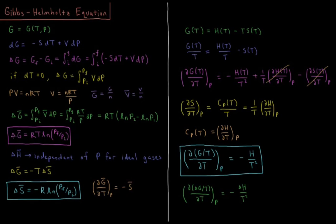So the change in the molar Gibbs energy during an expansion or compression event at constant temperature is equal to the gas constant times the temperature times the natural log of the final pressure over the initial pressure.